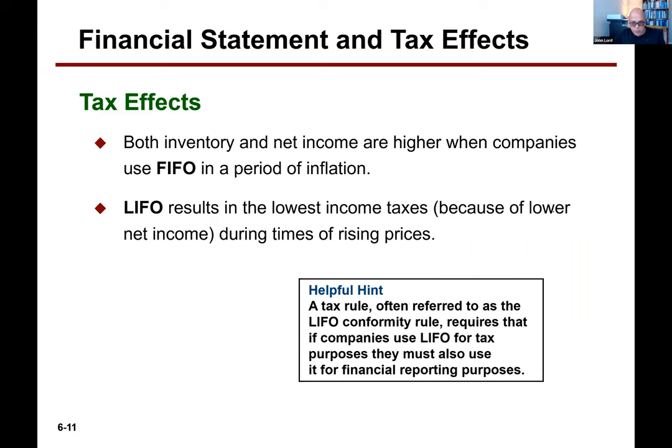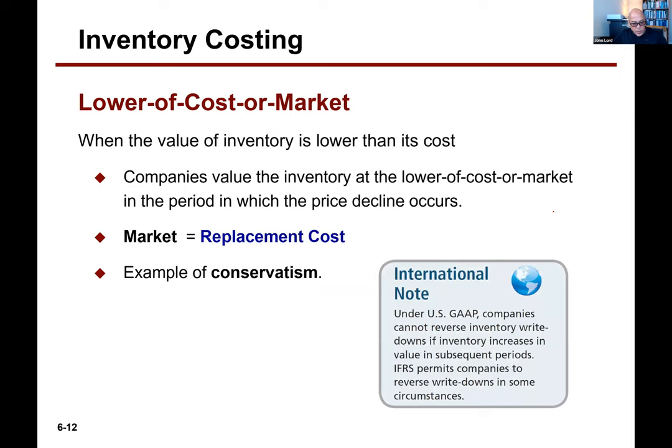Under FIFO, inventory and net income are going to be higher. Under LIFO, we're going to have lower income taxes but show a smaller gross profit. Companies choose LIFO because they don't want to pay as much tax.